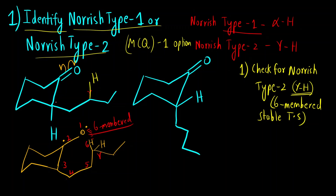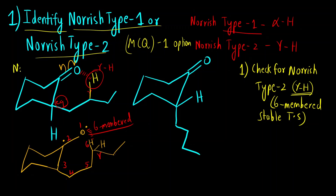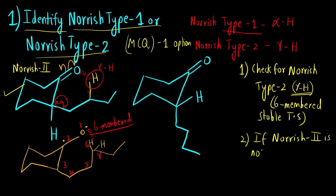Here if we see, this is above the plane at the equatorial position, so oxygen can interact with the gamma hydrogen. In this molecule Norrish type 2 will take place because type 2 is possible. You have to check for type 2 first, and if Norrish type 2 is not possible then type 1 will take place.